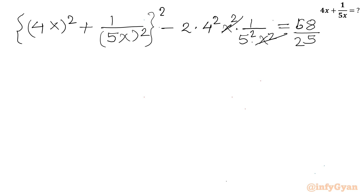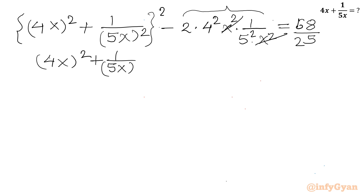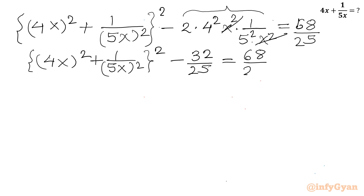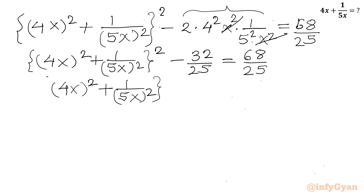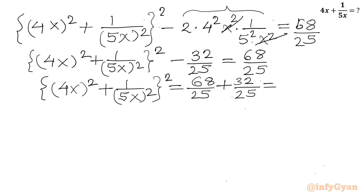We cancel x² with x², giving 16 times 2 over 25, which is 32 over 25. So we have (4x)² plus 1 over (5x)², whole squared, minus 32 over 25 equals 68 over 25. Moving 32 over 25 to the right: (4x)² plus 1 over (5x)², whole squared, equals 68 over 25 plus 32 over 25, which is 100 over 25, equal to 4.